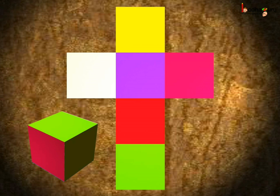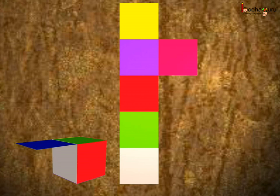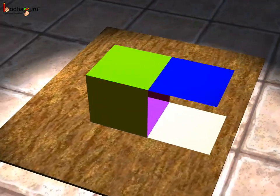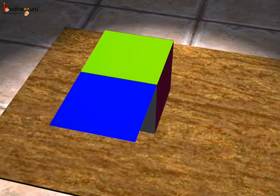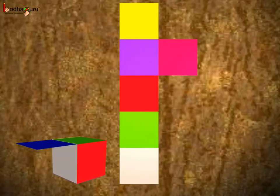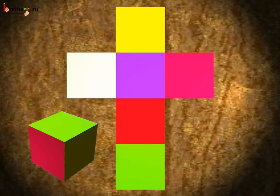Let us understand this more. Look here — this pattern also contains 6 square faces. Is this the net of a cube? If we fold it, one face doesn't take its proper place and we don't get the solid shape. So this is not a net of the cube. What do we conclude? In a net, the faces are arranged such that all faces take their proper position to form the solid shape when folded. So a net should have all the faces of the solid shape and the arrangement of faces should be correct.